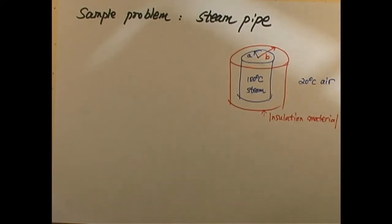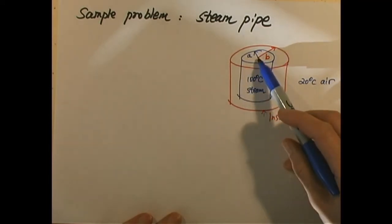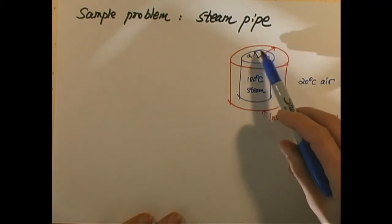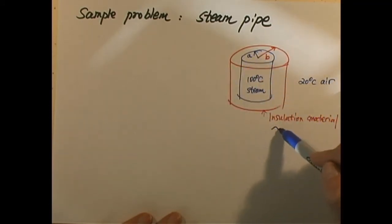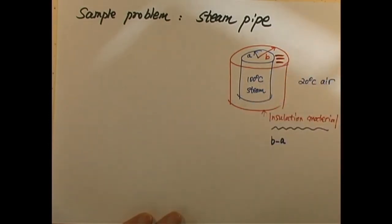Let's look at how to solve a problem. I just mentioned a steam pipe at 100 degrees Celsius in the middle. The steam pipe radius is A and we wrap a layer of insulating material. The thickness is B minus A because that is this part.